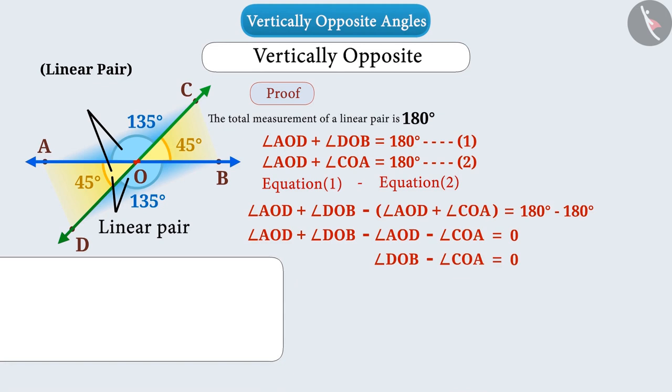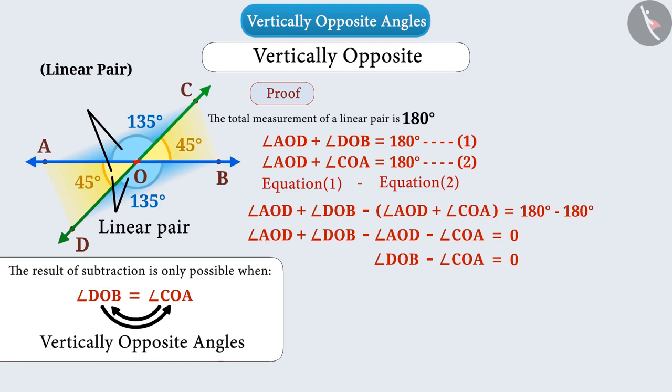The result of this subtraction is only possible when angle DOB and angle COA are equal. But if we see these two angles are vertically opposite to each other, this verifies that the vertically opposite angles are equal.